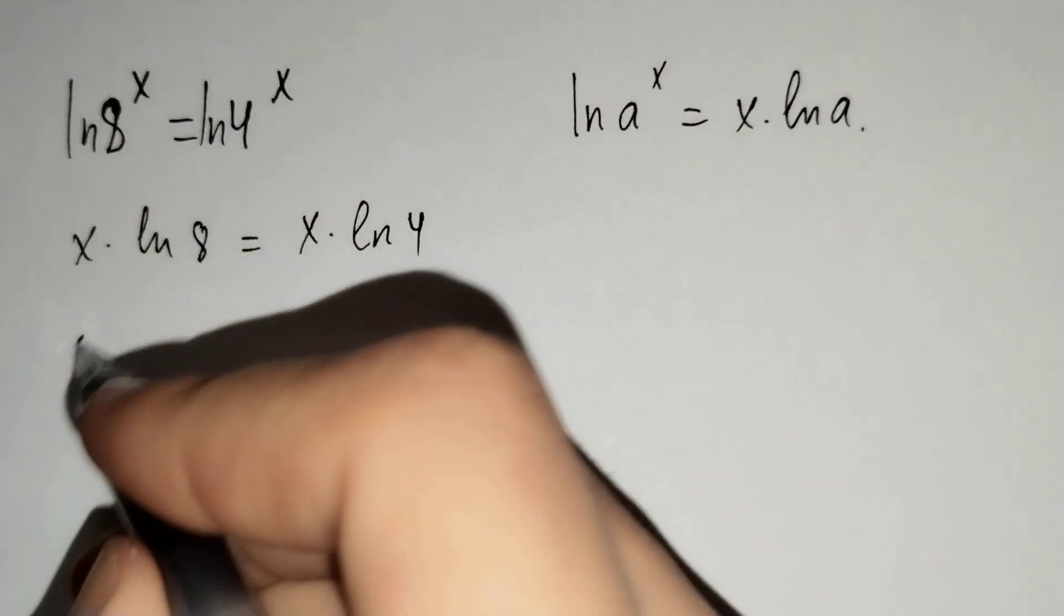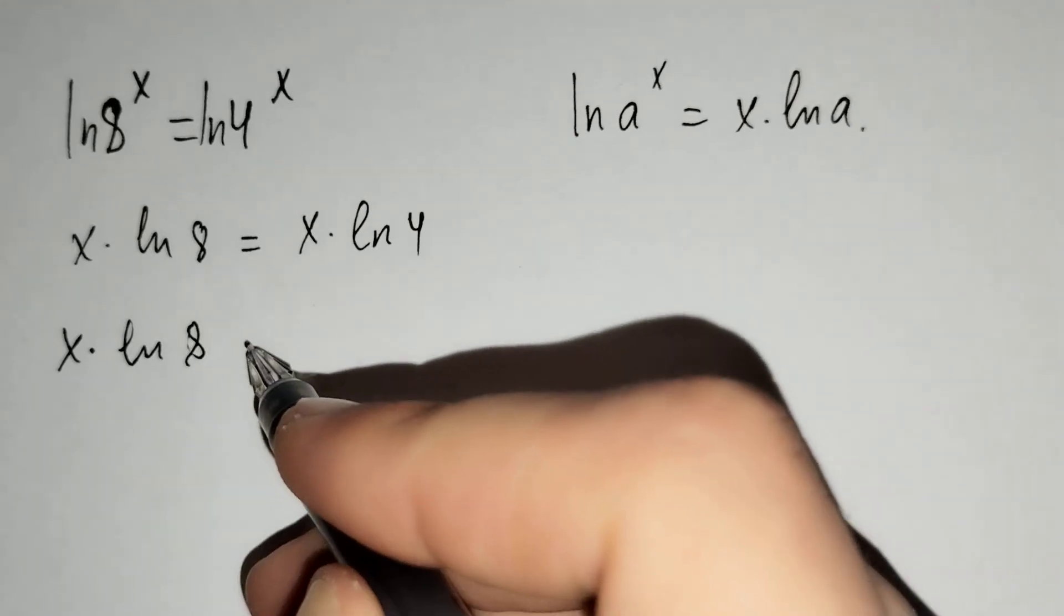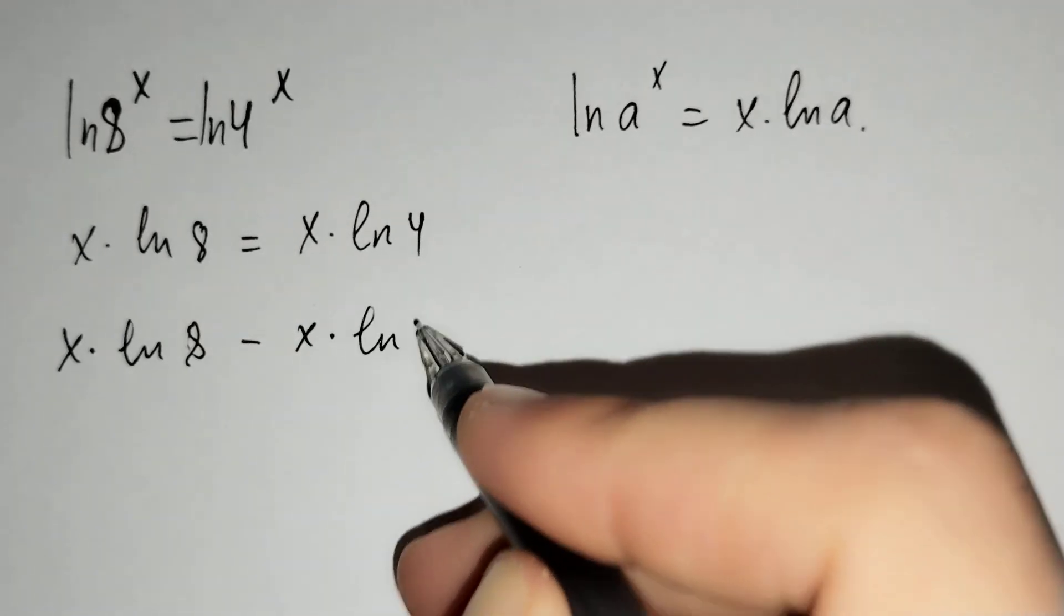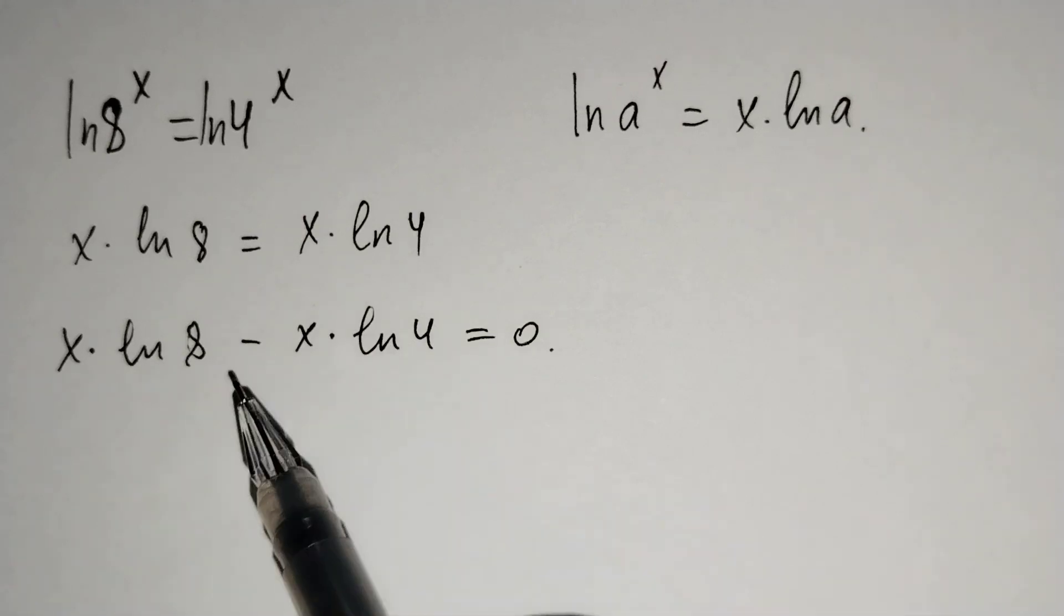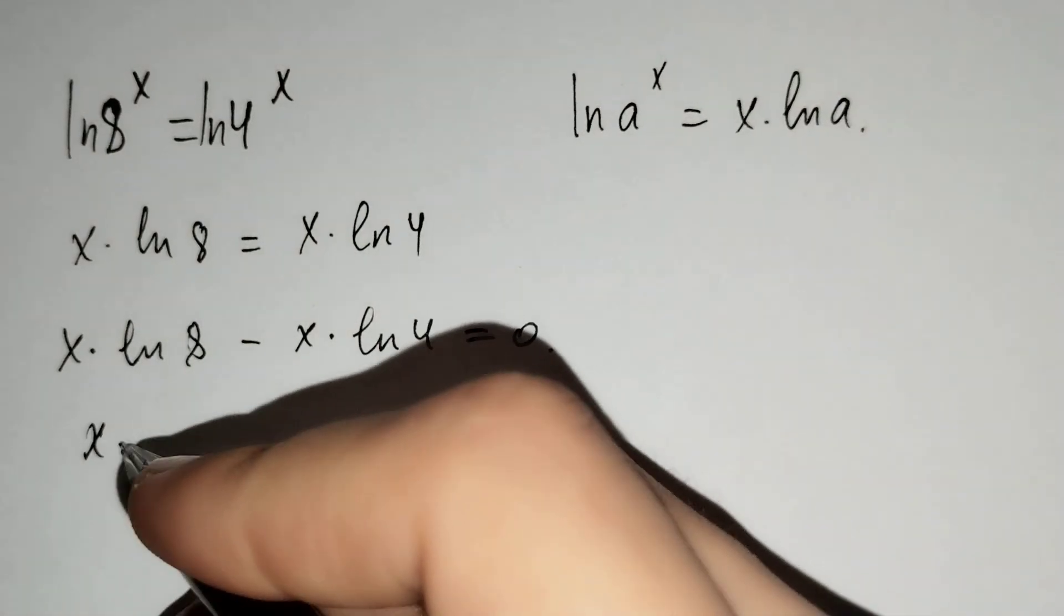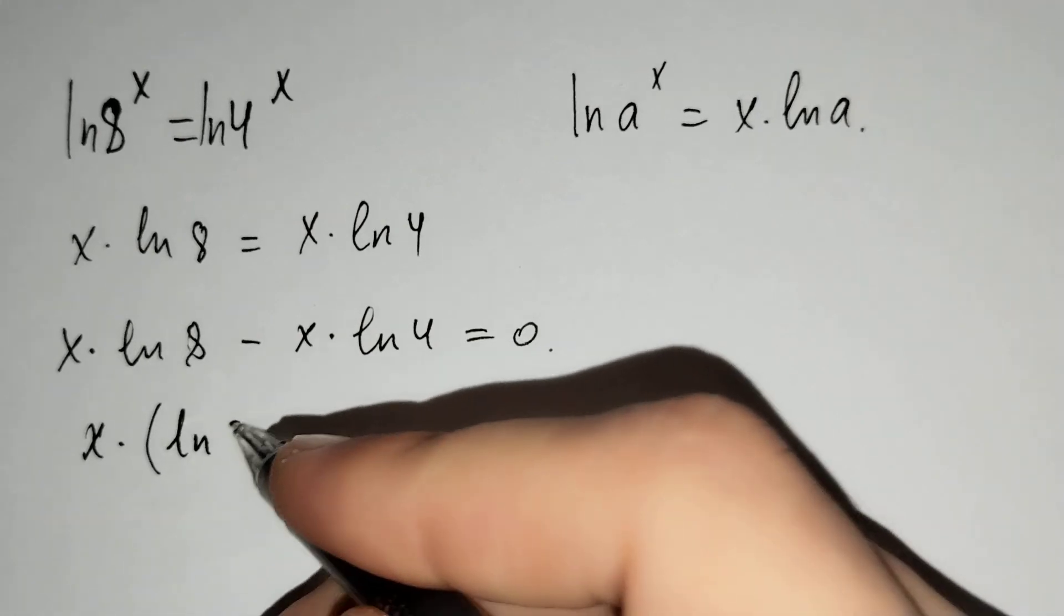We get x times ln 8 minus x times ln 4 equals zero. Now let's take x out of the brackets: x times ln 8 minus ln 4 equals zero.